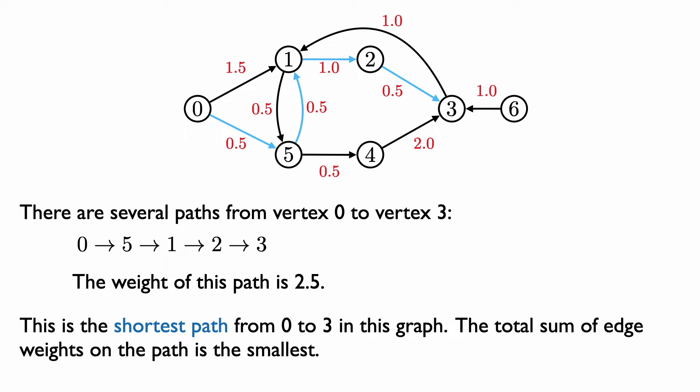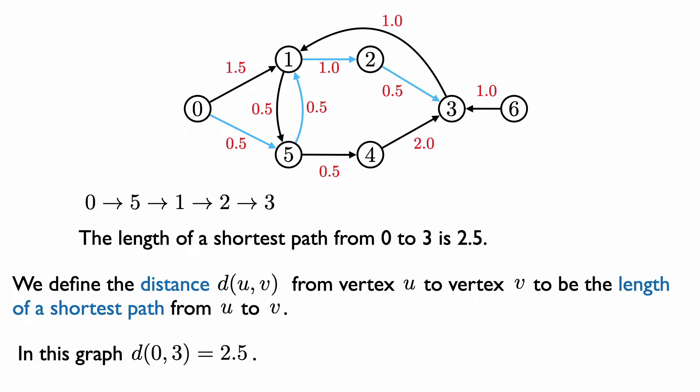This is actually the shortest path from vertex 0 to vertex 3 in this graph. The sum of the weights of the edges on any other path from vertex 0 to vertex 3 is larger. Note that this path uses 4 edges, and the other paths we saw only use 3 edges. In a weighted graph, however, we care about the sum of the edge weights of the edges on the path, not the number of edges. We define the distance from vertex u to vertex v in the graph, denoted d(u,v), to be the length of a shortest path from u to v. So in this example, d(0,3) is 2.5.